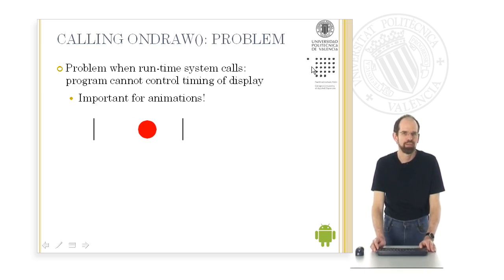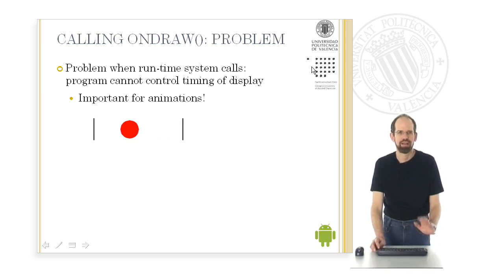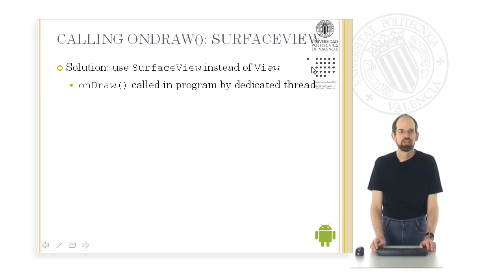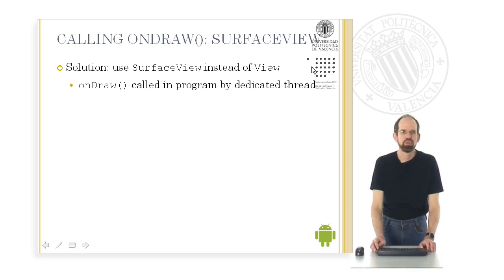This is important for animations. If you want to program an animation, you must control the points in time when to display the next step of the animation — for example, the next position of a bouncing ball.